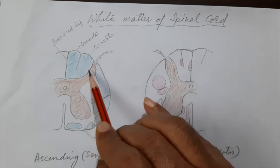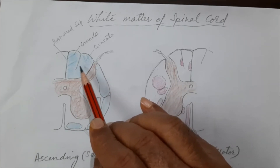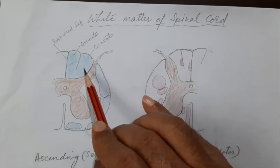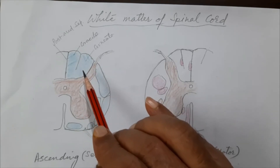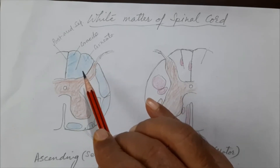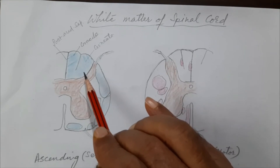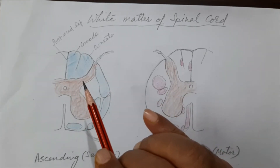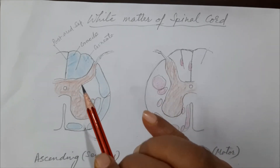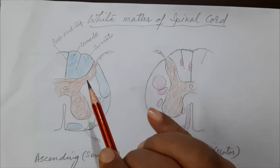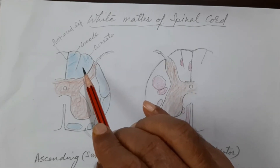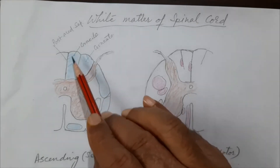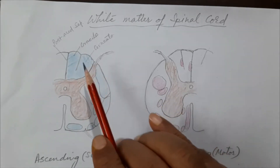The fasciculus cuneatus carries the same types of sensations — proprioception, fine touch, and tactile discrimination — but from the upper part of the trunk (above the mid-thoracic region), the arm, and the neck. This completes the sensory or ascending tracts of the posterior column.